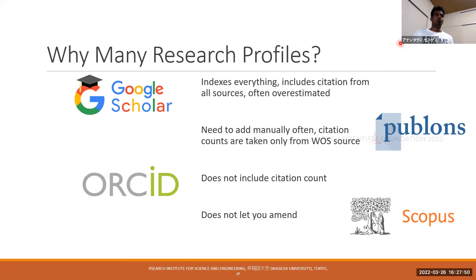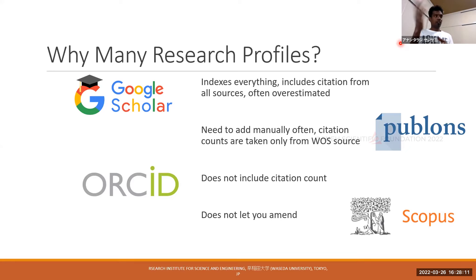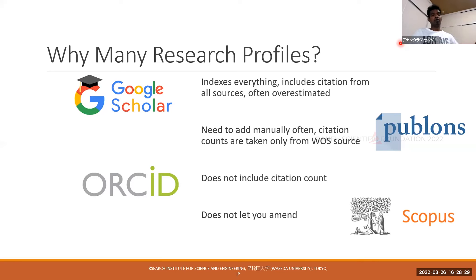But the problem with Google Scholar is that it indexes everything. It does not differentiate between your research article, the abstract you submitted somewhere, or the mention of your article in some online blog or podcast. It doesn't discriminate or differentiate — it doesn't actually see what is a research article versus a blog or something said about your research by someone else on a totally different platform. So it indexes everything, including citations from all sources, not only from research articles. The citation counts in your Google Scholar profile tend to be always overestimated compared to your real citation count.